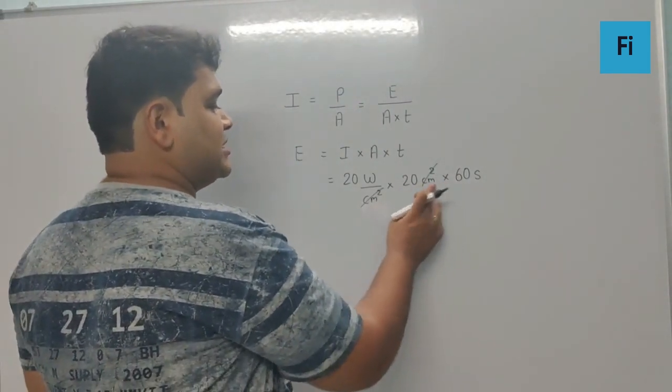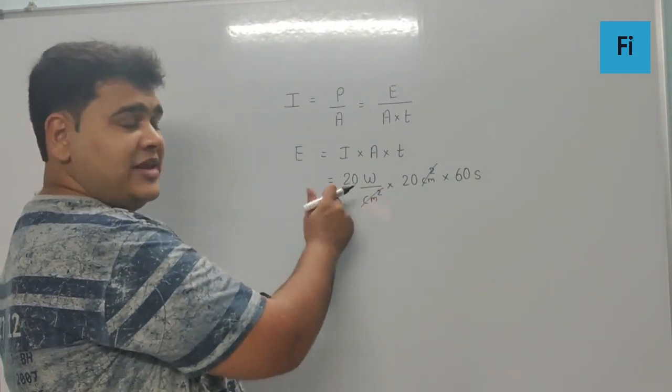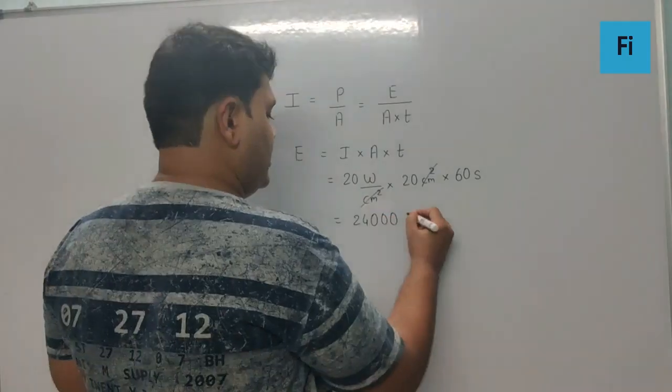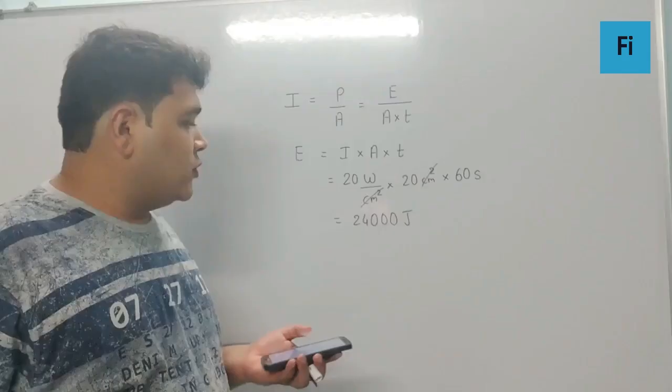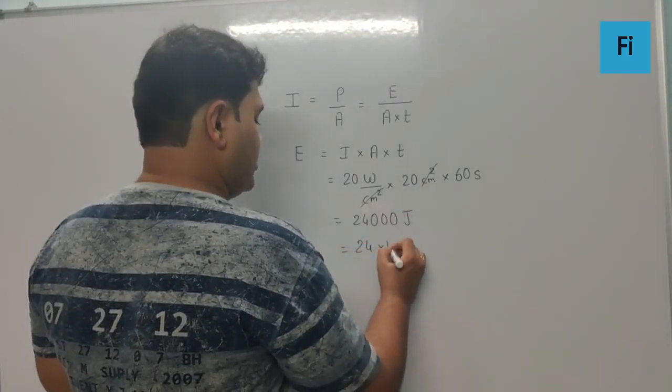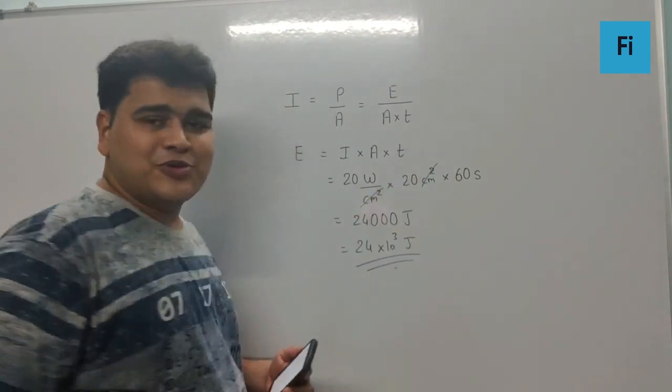Now if I multiply this as 6 into 2 is 12, 12 into 2 is 24, I will have 24 with 3 zeros - so 1, 2, 3 zeros - Joule. So 24,000 Joule must be your answer, which can be written as 24 into 10 raise to 3 Joule as per the given options.